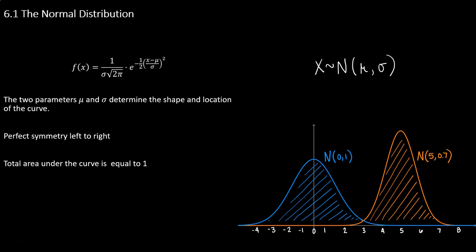There are two curves on the screen, a blue curve and an orange curve. They're both normal distributions, but only the blue one is a standard normal distribution. The orange curve is just a normal distribution, not standard. Notice that both curves are perfectly symmetric left to right, so we could fold the curves right down the center and they would perfectly align the left side and the right side.